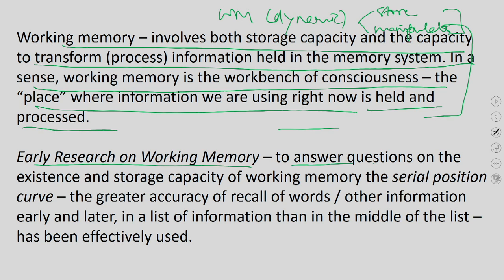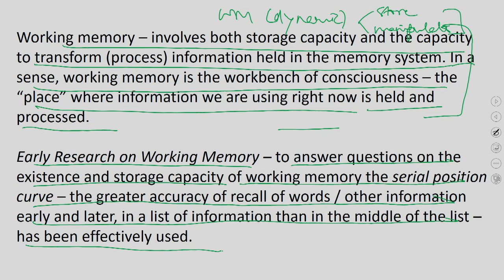To answer questions on the storage capacity of working memory, researchers used the serial position curve — the greater accuracy of recall of words early and late in a list compared to the middle. The question was: the short-term store could store 7 ± 2 chunks of items. A chunk is information of the same type organized together — for example, a list of animals, birds, food items, and furniture.